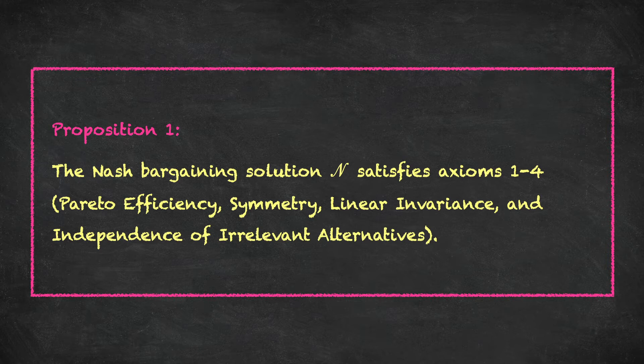Proposition 1 is that the Nash bargaining solution N satisfies axioms 1 through 4: Pareto efficiency, symmetry, linear invariance, and independence of irrelevant alternatives.